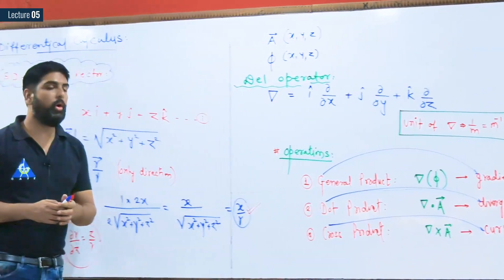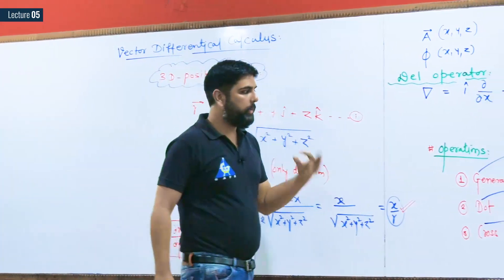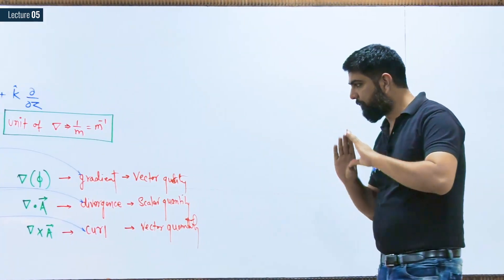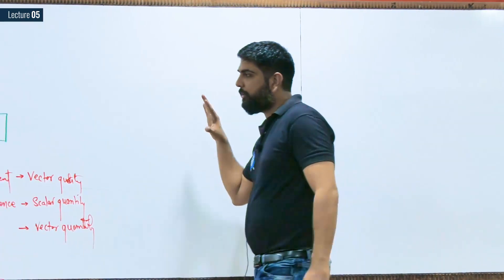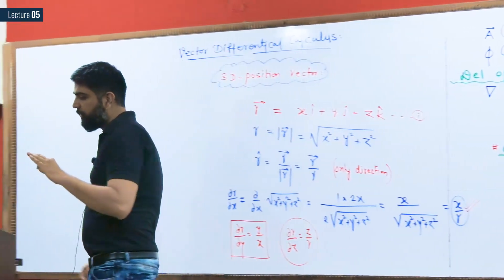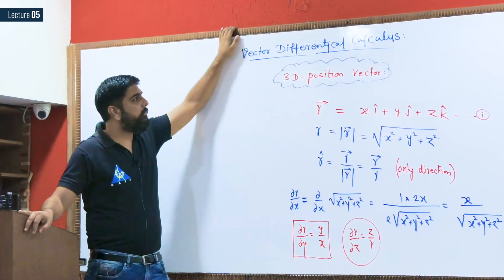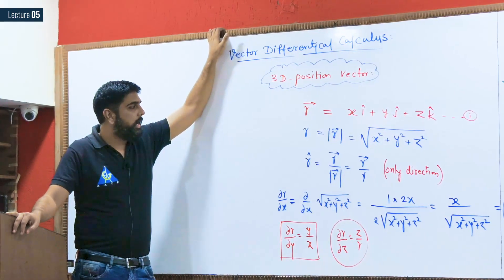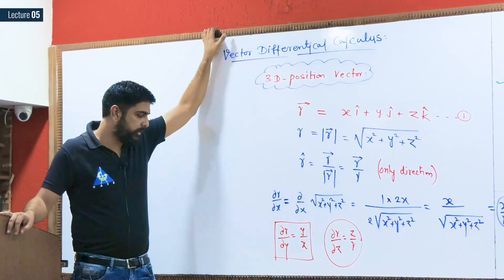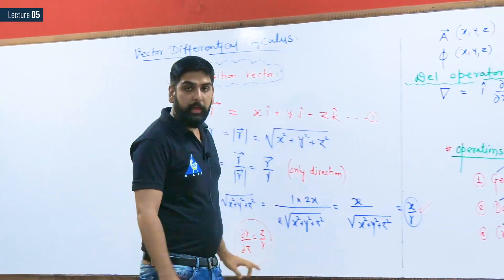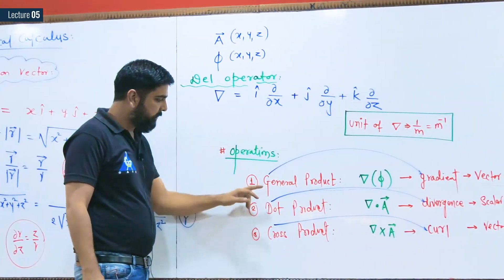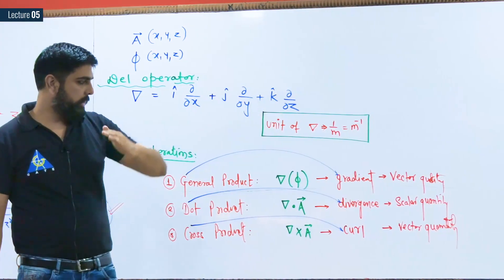In the next video, I will explain the concepts of gradient, divergence, and curl in a single video with examples, followed by workbook questions. To summarize today's lesson: we covered the three-dimensional position vector, the results ∂R/∂x = x/R, ∂R/∂y = y/R, ∂R/∂z = z/R, the del operator and its unit m-inverse, and the three operations G, D, and C.